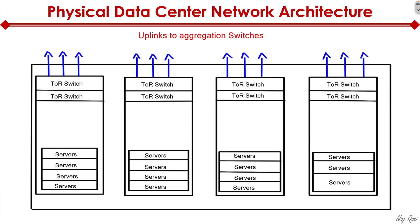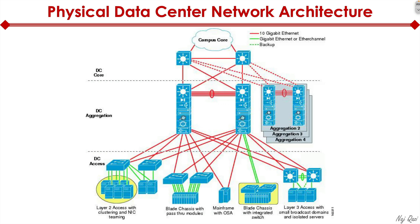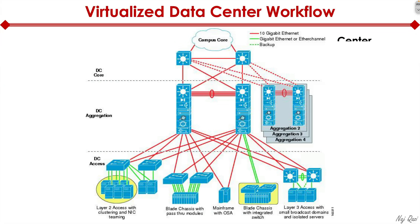We have multiple top of rack switches for high availability purposes and for dual homing purposes. Those top of rack switches ultimately get aggregated and terminated into aggregation switches, which would ultimately connect to the core of our network, connecting us to the outside world. This is typically how a data center is configured physically.